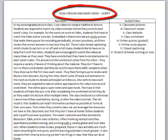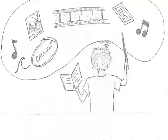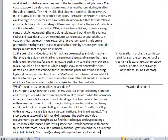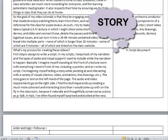What's my process for creating these videos? The first step is always to write a script. In my scripts, I keep track of my narration and the types of audio and visual support I want to include while the narration is happening. Basically, I imagine myself standing at the front of a lecture room with everything I need in front of me, including a pointer, interacting with a variety of visuals, demos, video, animations, line drawings, etc. I find this technique ends up creating a much more coherent and interesting story than I would have come up with on the fly in the classroom, because it naturally and thoughtfully comes out as a story as I write.